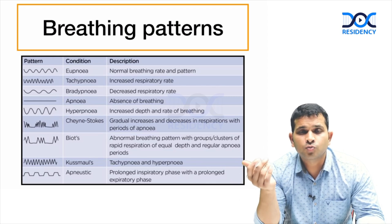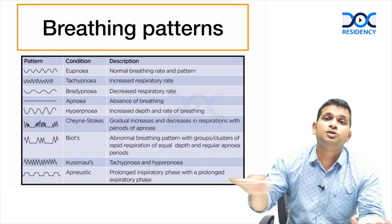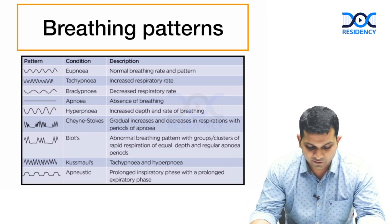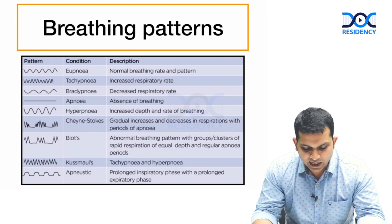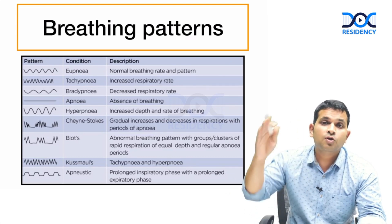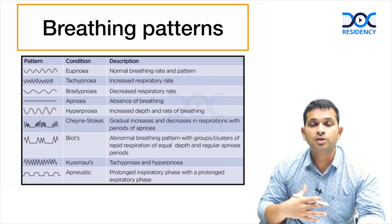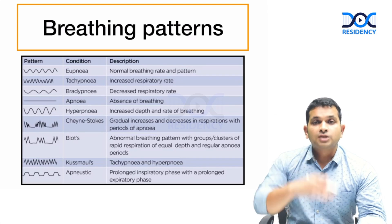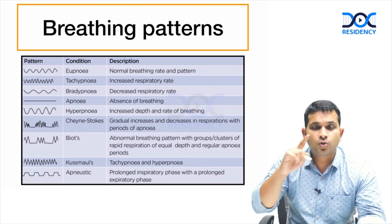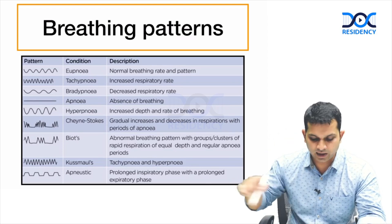Hyperpnea is different from tachypnea: in tachypnea there is no increased depth of breathing — you are just breathing faster — but in hyperpnea, both the depth and rate of breathing are increased. So tachypnea and hyperpnea are not the same. Tachypnea: faster rate, same depth. Hyperpnea: increased rate and increased depth.